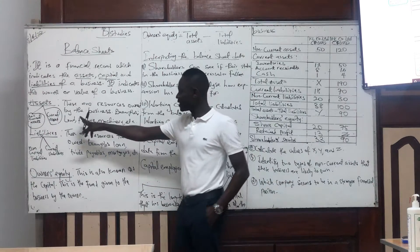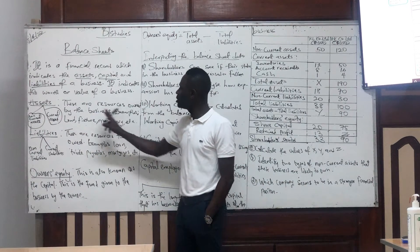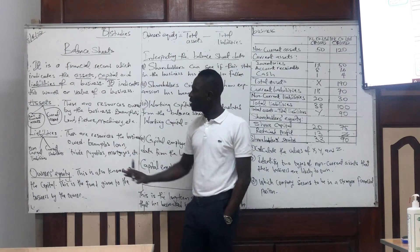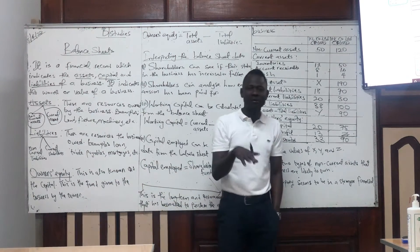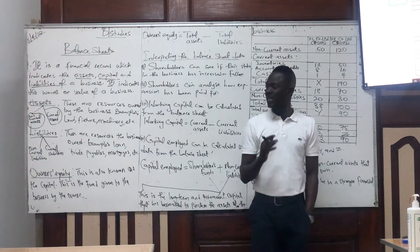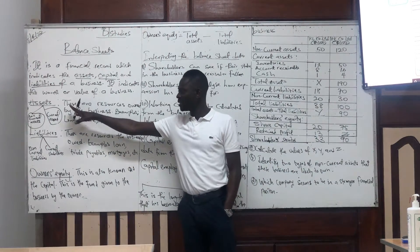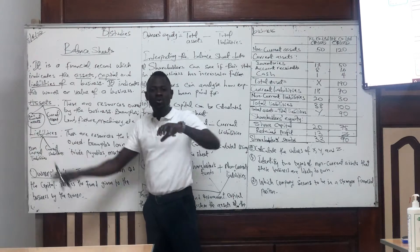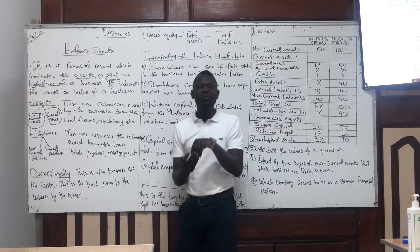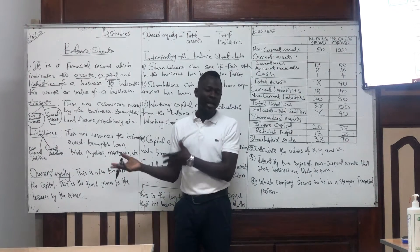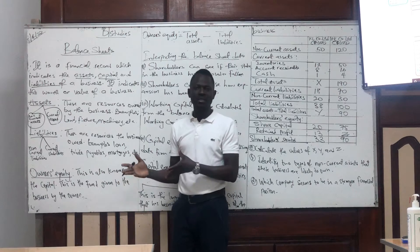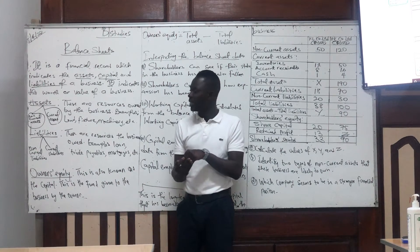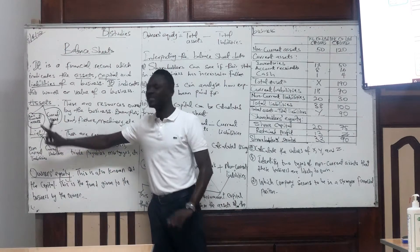So what are assets? These are resources owned by the business — for example, land, a shop, machinery. Whatever resources you have that belong to the business is what we call an asset. We have two types of assets. We have non-current assets, which can last more than a year, like land, a shop, premises, buildings, and machinery.